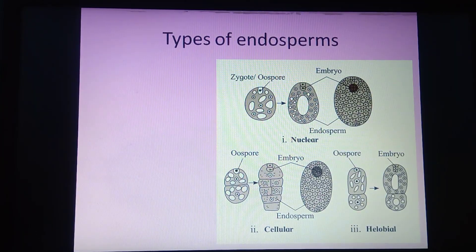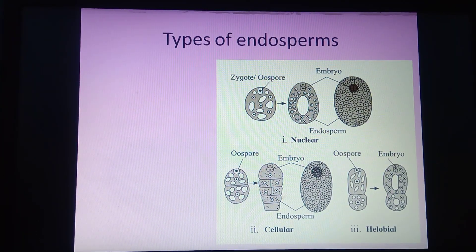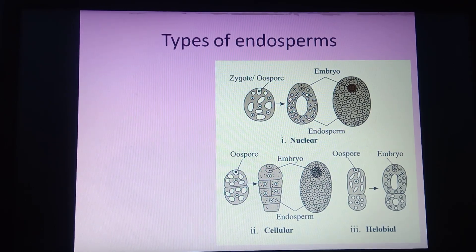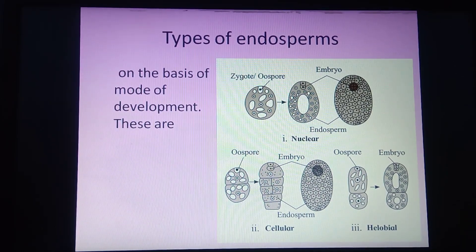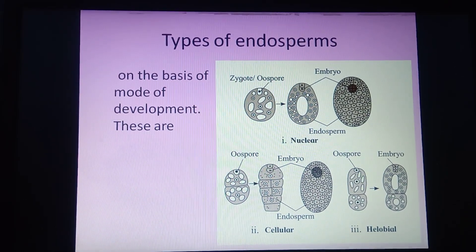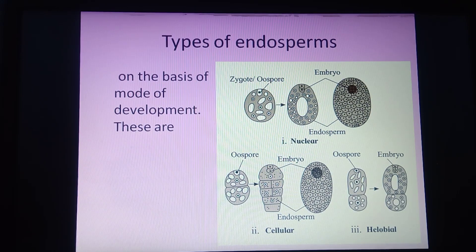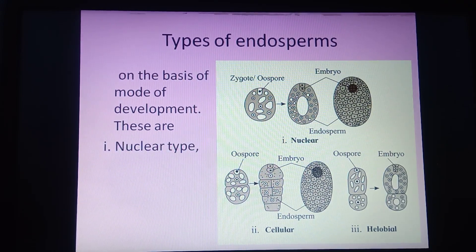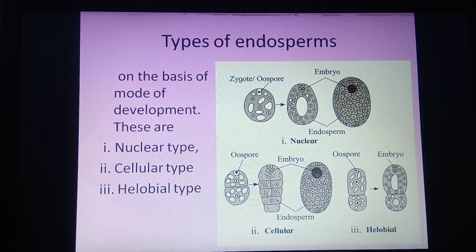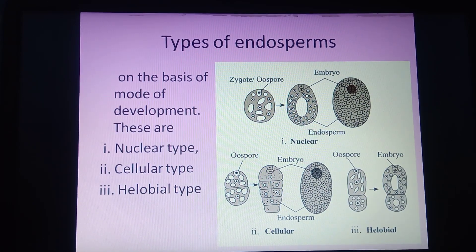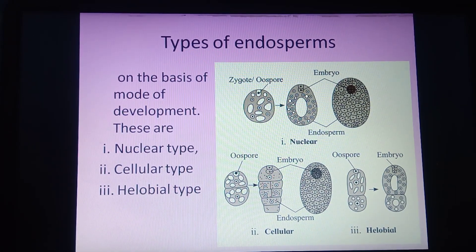There are three different types of endosperm according to the mode of development: nuclear type of endosperm, cellular type of endosperm, and helobial type of endosperm.